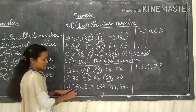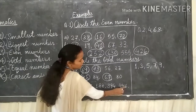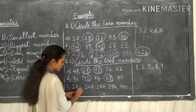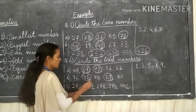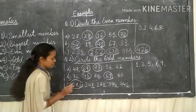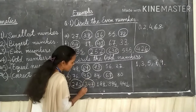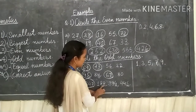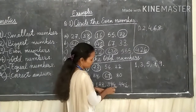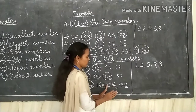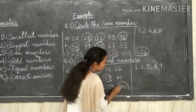Number C: 275, 347, 188, 394, 445. Again we will focus on the place of 1's: 5, 7, 8, 4, 5. 5 is an odd number, so we will circle 275. 7 is an odd number, so 347 is an odd number, we will circle it. 188 — 8 is an even number, we will not circle this. 394 — 4 is also an even number, so we will not circle this. 445 — 5 is an odd number, so we will circle 445.